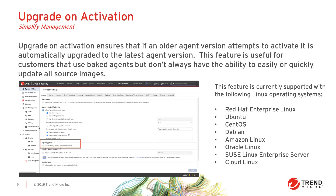The next feature, upgrade on activation, is good for keeping your entire environment up to date when you implement new machines. It instructs Deep Security agents to automatically upgrade when they activate if the current version they're running doesn't match the latest compatible version available on the Deep Security Manager. Upgrade on activation is initially supported for Linux platforms only; Windows and Unix platforms will be skipped when the feature is enabled and is controlled through a global system setting. When you put new machines out there and install the Deep Security Agent, as soon as they activate, it checks in with the Deep Security Manager to ensure it's running the latest compatible version.